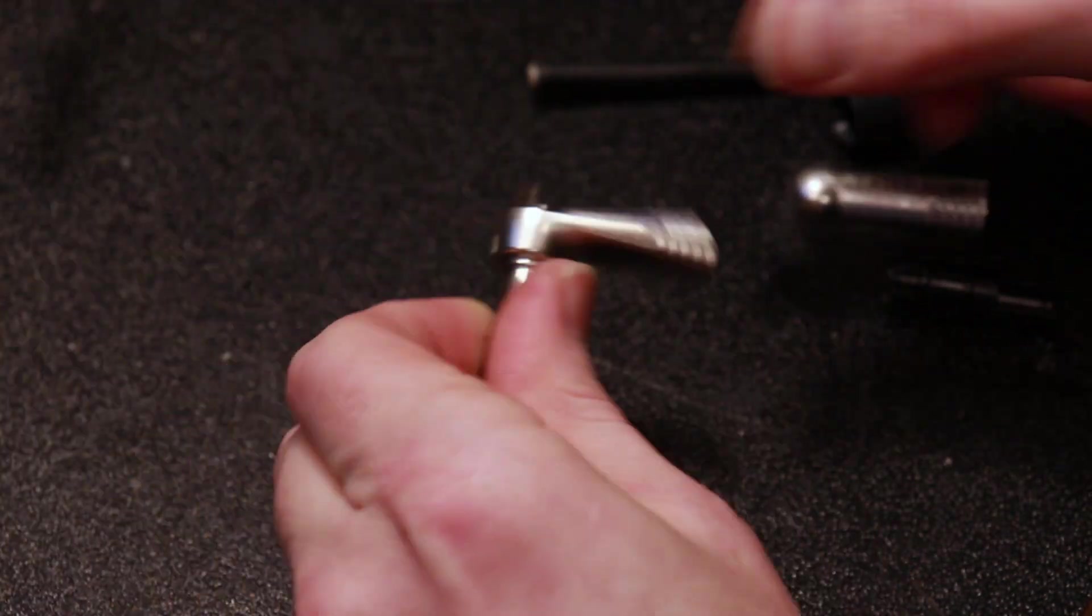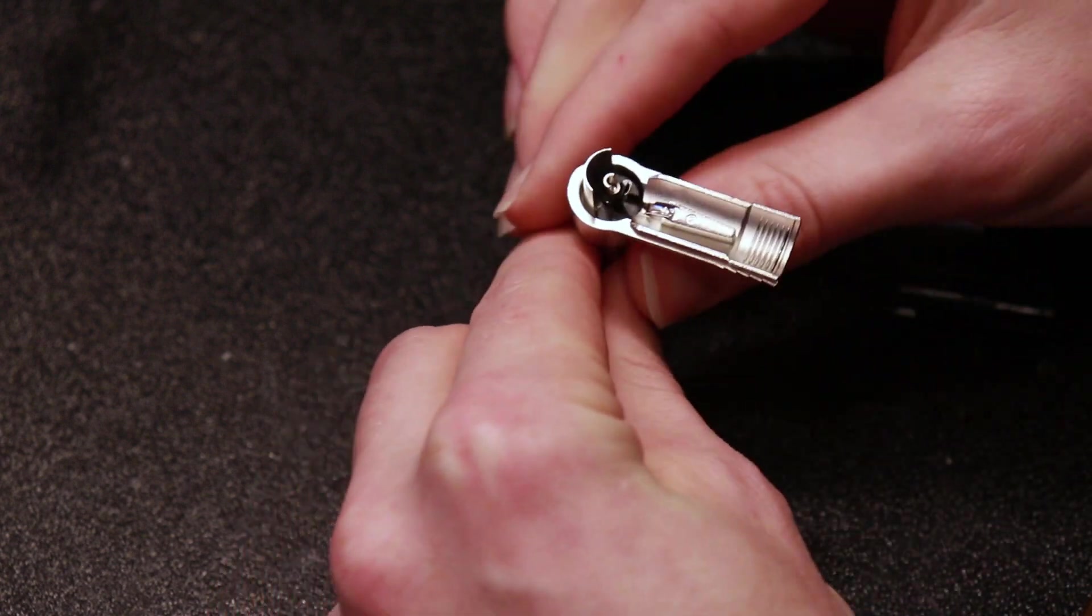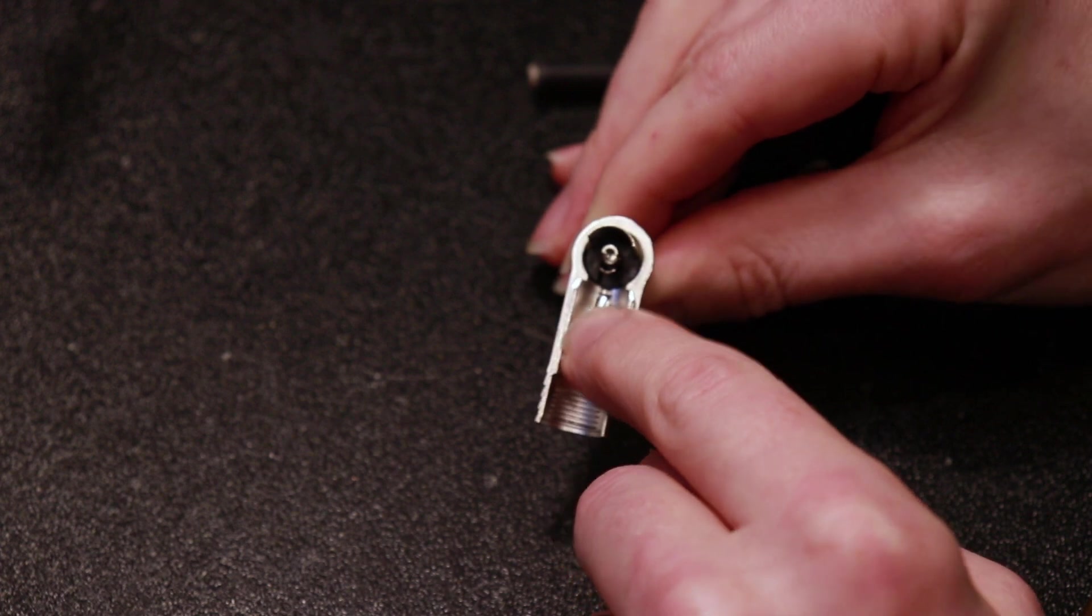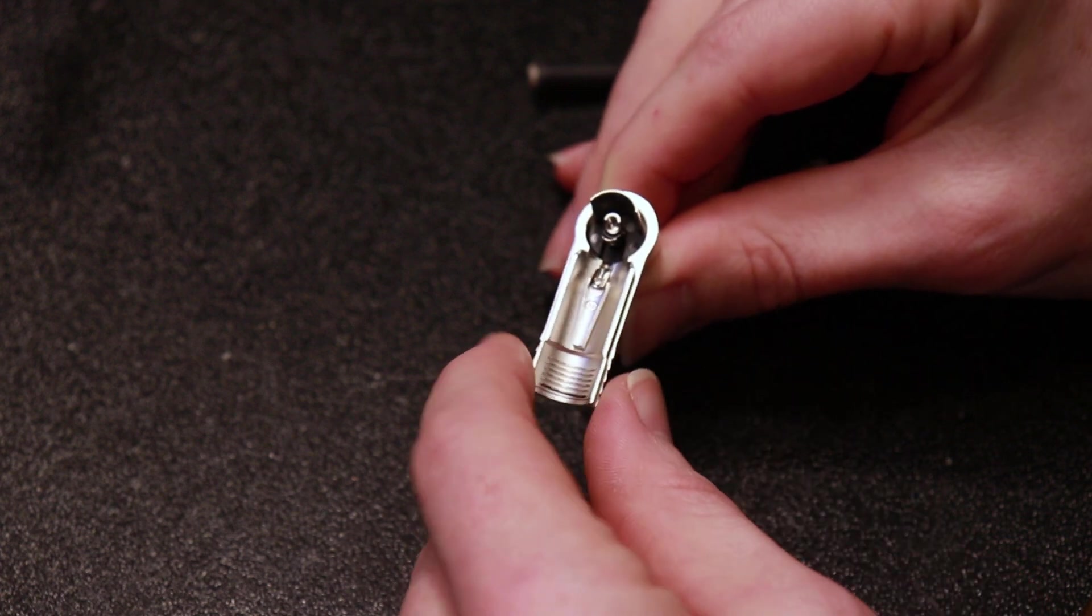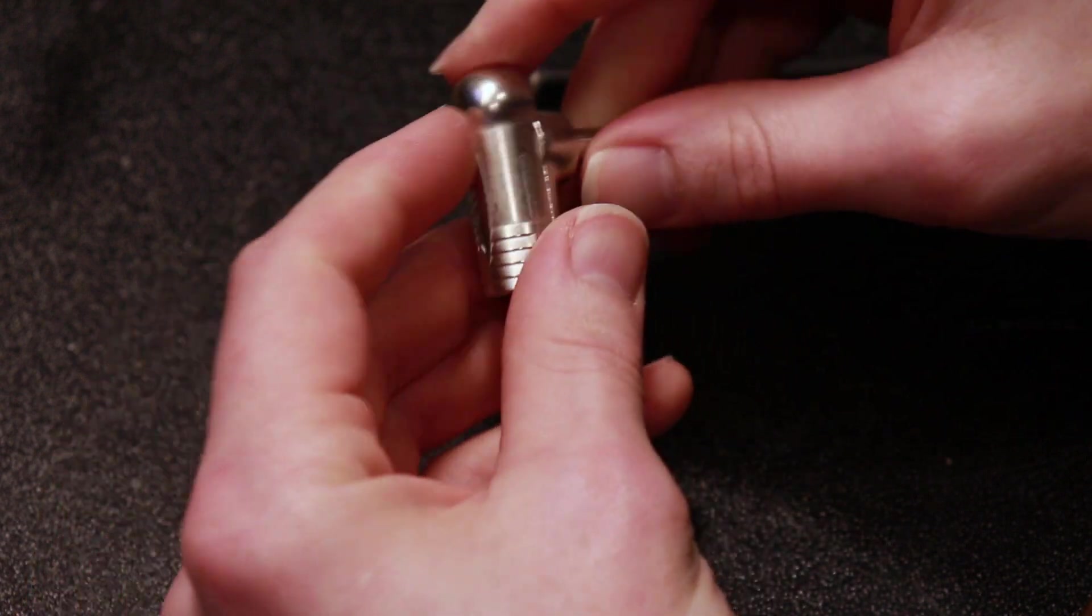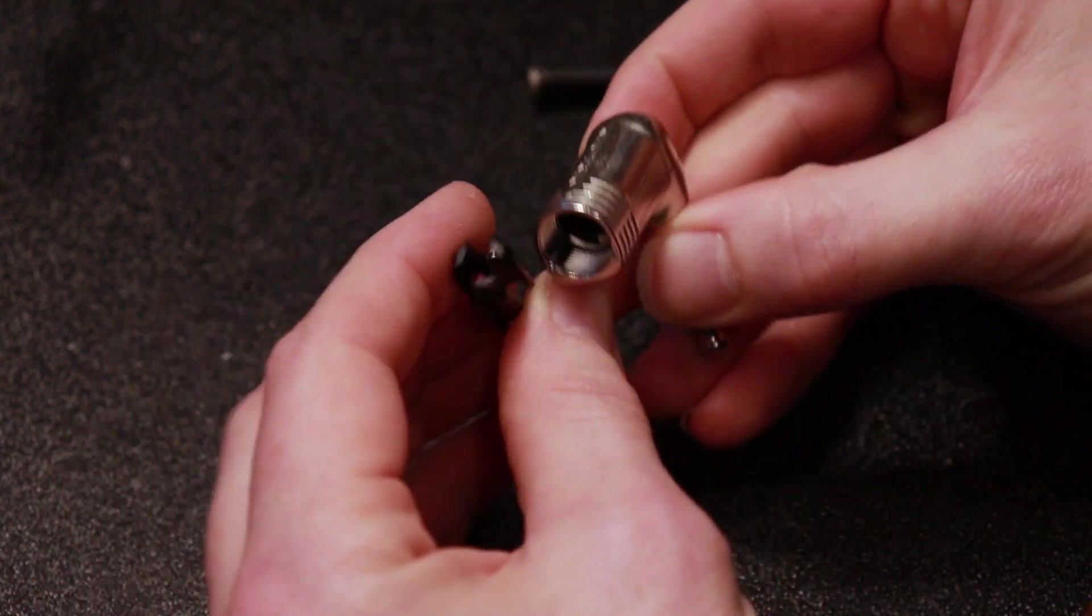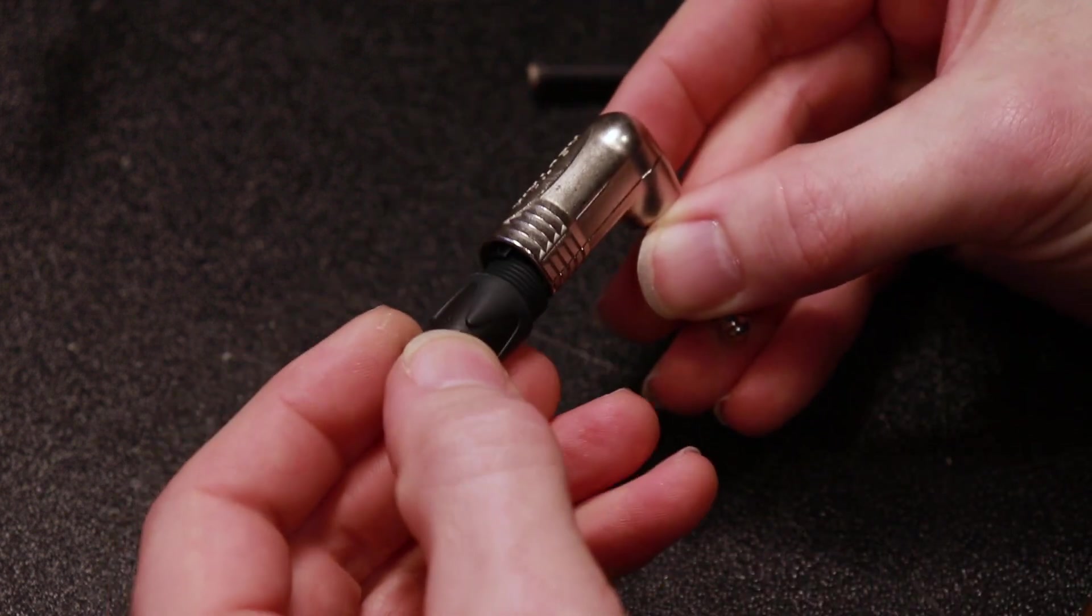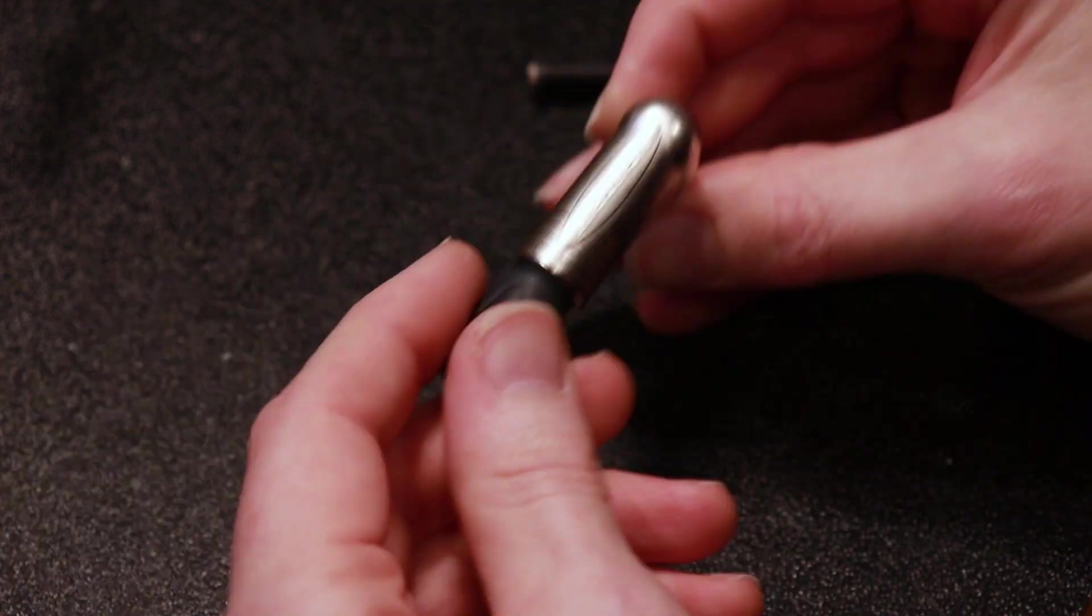We can see on the nicer Neutrik jacks, we got three tabs in here for our hot signal, cold signal, and ground, all to solder to, which is going to make it nice and easy. And we can see the way this goes together. This end slides over. We got this nice strain relief here that's going to really clamp down on the cable and keep it tight, and the whole thing will screw together nicely.